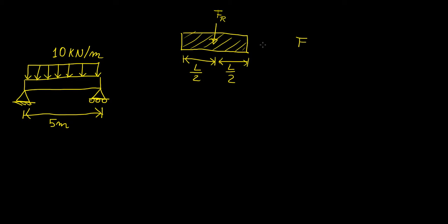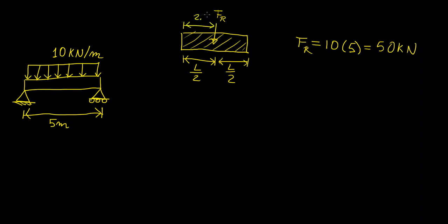In our case, the total magnitude of this distributed load is 10 kilonewtons per meter, which is the total height of this section. So we multiply 10 by the total length of the beam, which is 5 meters, and that gives us a total resultant force of 50 kilonewtons. This resultant force is going to be acting halfway through, so that means it's acting 2.5 meters from either end.